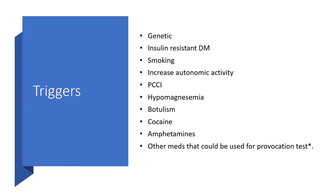There are certain triggers. Genetics — if this is genetic in origin, there is nothing you can do about it. Insulin-resistant diabetes mellitus could be a trigger. Smoking and increased autonomic activity are also triggers. Someone with myocardial infarction undergoing percutaneous coronary intervention might have vasospastic angina triggered.